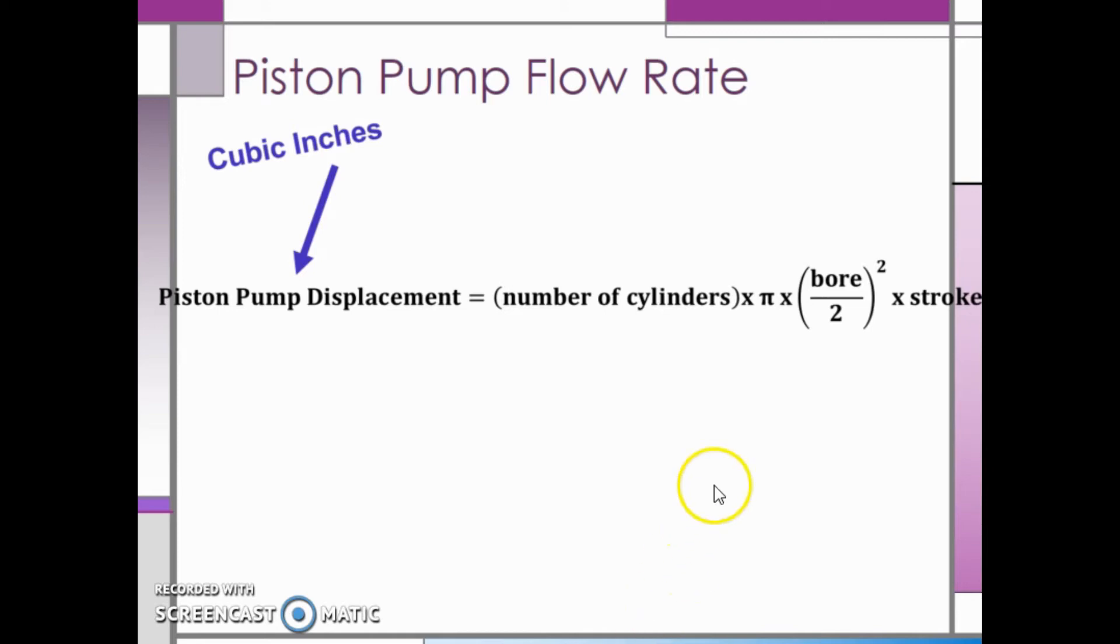Make sure you take the bore divided by 2 and square that quantity. Using parentheses in your calculator will help make sure you enter that part correctly.